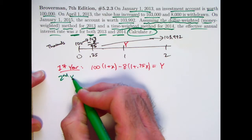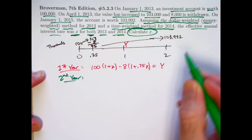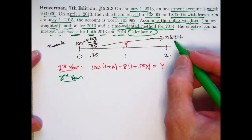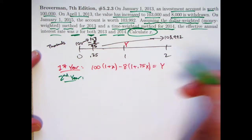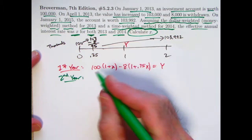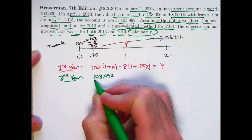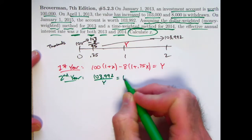Get the next equation by thinking about the second year. We're thinking about the time-weighted method for the second year, so we just look at the ratio. 103.992 divided by Y minus one, that would have to equal x. Or another way to look at that is to say 103.992 divided by Y equals one plus x.